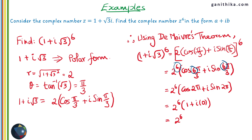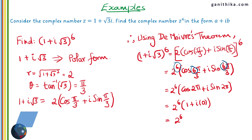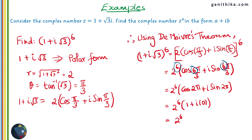If you raised this to the power of 5 instead, you might get a different complex number as the answer. The result could be purely real, purely imaginary, or a proper complex number in the form a + ib — that depends on the power and the complex number itself. You can pause the video and try raising 1 + i√3 to other powers, such as the 5th and 3rd, using De Moivre's theorem.